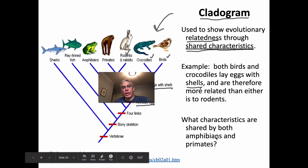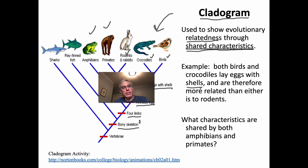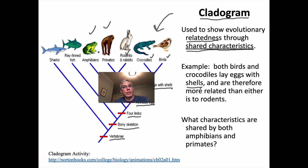Looking at the cladogram question — what characteristics are shared by both amphibians and primates? You can't use the amniotic egg characteristic because it comes after the line for amphibians. The first shared characteristic before that is four limbs — amphibians have four limbs and so do primates. Both also have a bony skeleton, so that's the second shared characteristic. The third, found in all organisms at the top of the cladogram, is that they have vertebrae. These three characteristics — four limbs, bony skeleton, and vertebrae — are shared by amphibians and primates.